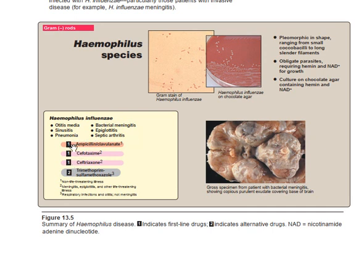What are the first-line drugs for Haemophilus influenzae? The first-line drug is ampicillin-clavulanic acid or amoxicillin-clavulanic acid. We use amoxicillin-clavulanic acid because clavulanic acid is a beta-lactamase inhibitor, and ampicillin is a broad-spectrum penicillin. Ampicillin is beta-lactamase sensitive and would be broken down by the beta-lactamase enzyme contained in Haemophilus influenzae, so you must add a beta-lactamase inhibitor.